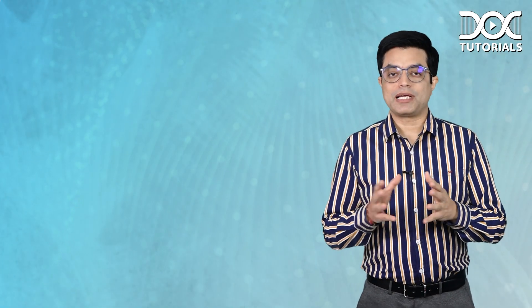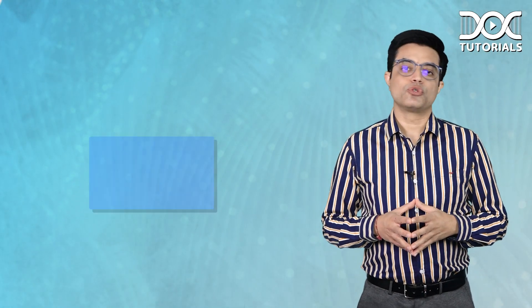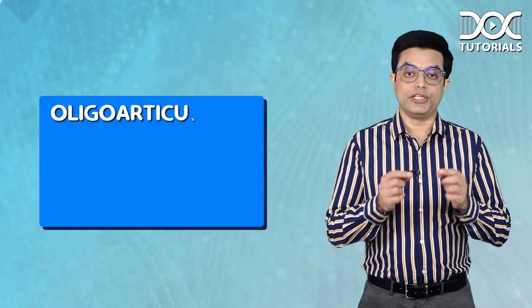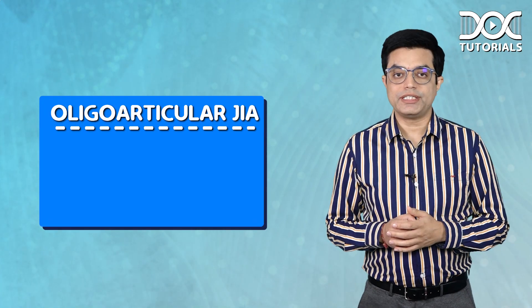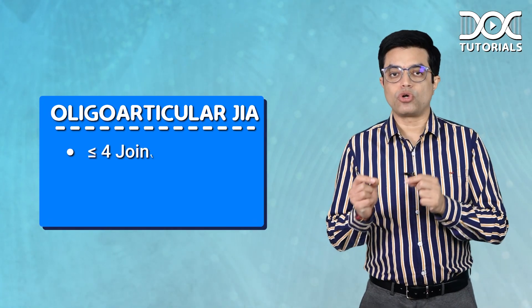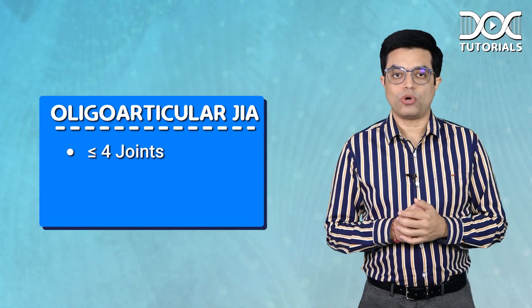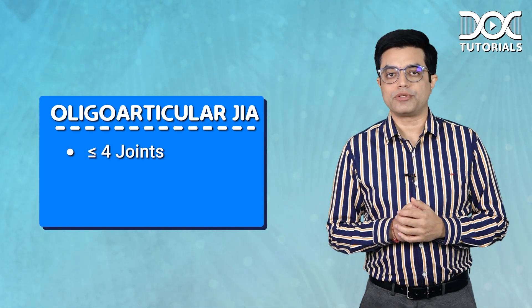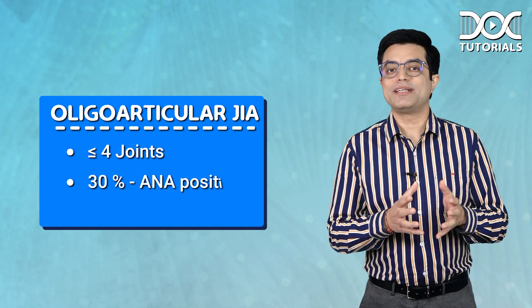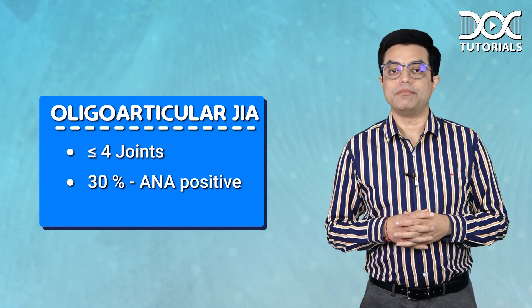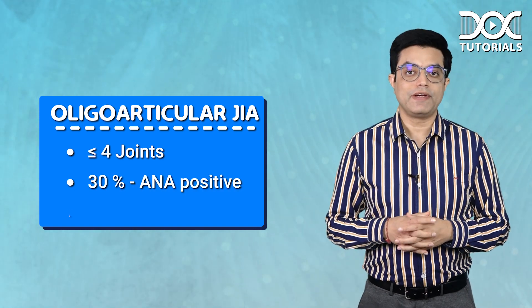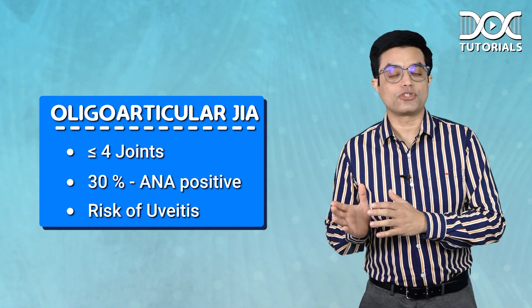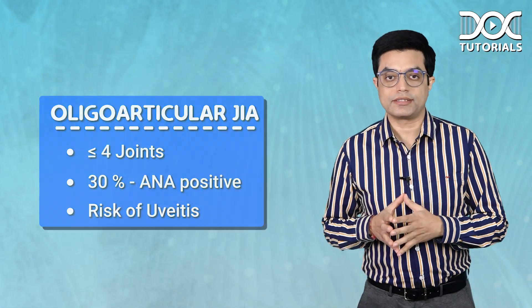Now, the subtypes of JIA. The most common variety is oligoarticular JIA, where four or less joints are involved. In oligoarticular JIA, about 30% of cases can be ANA positive and can have a risk of uveitis.